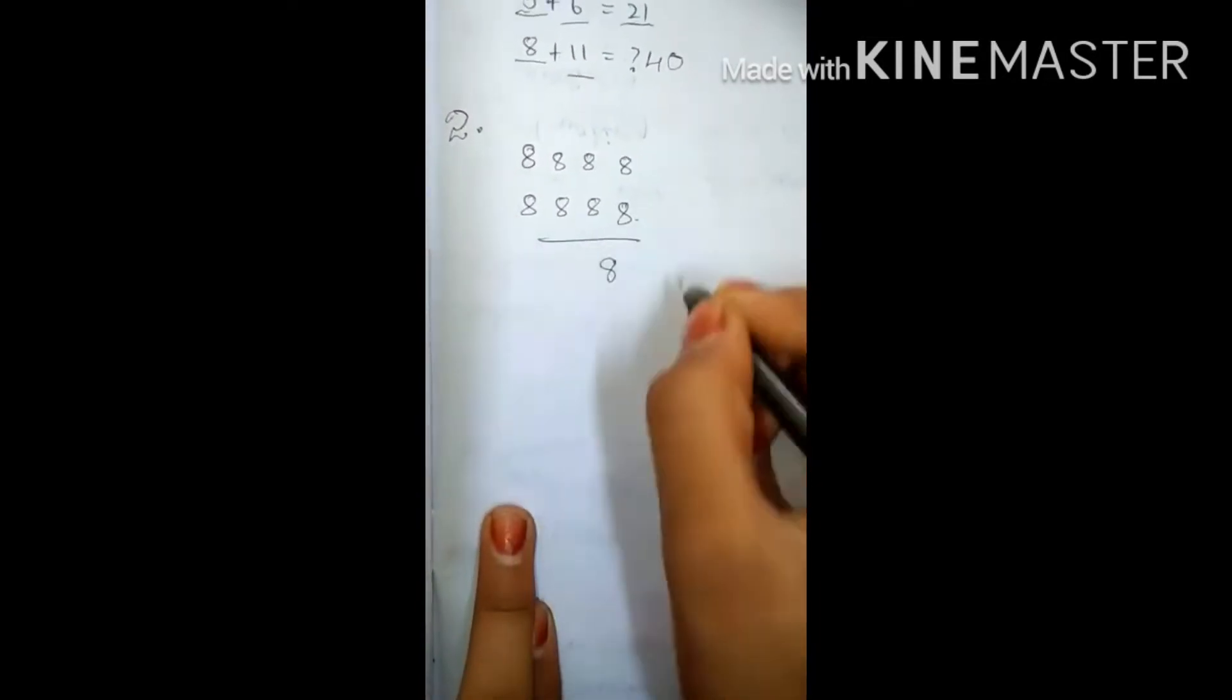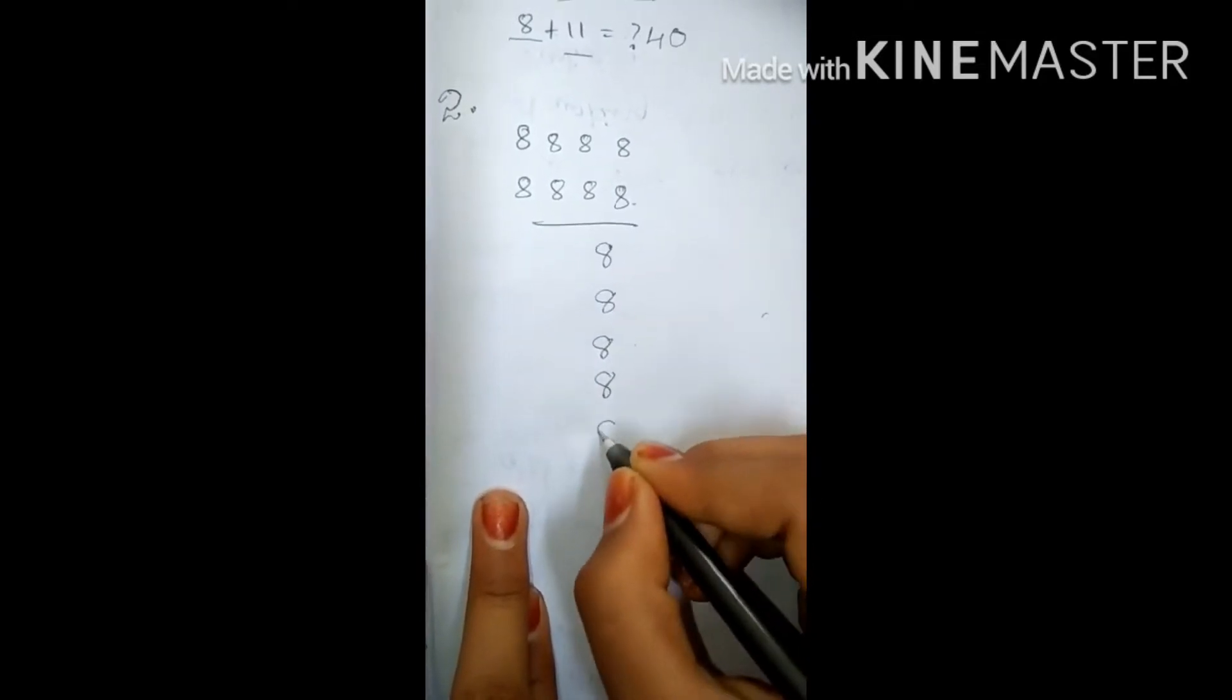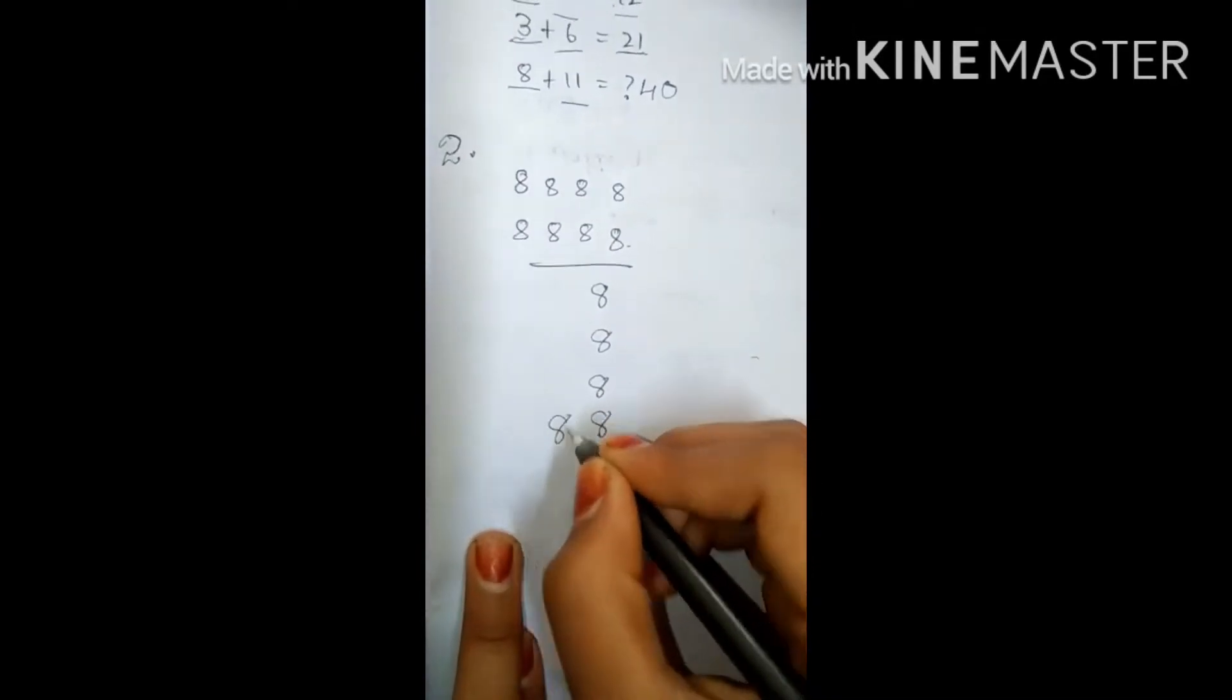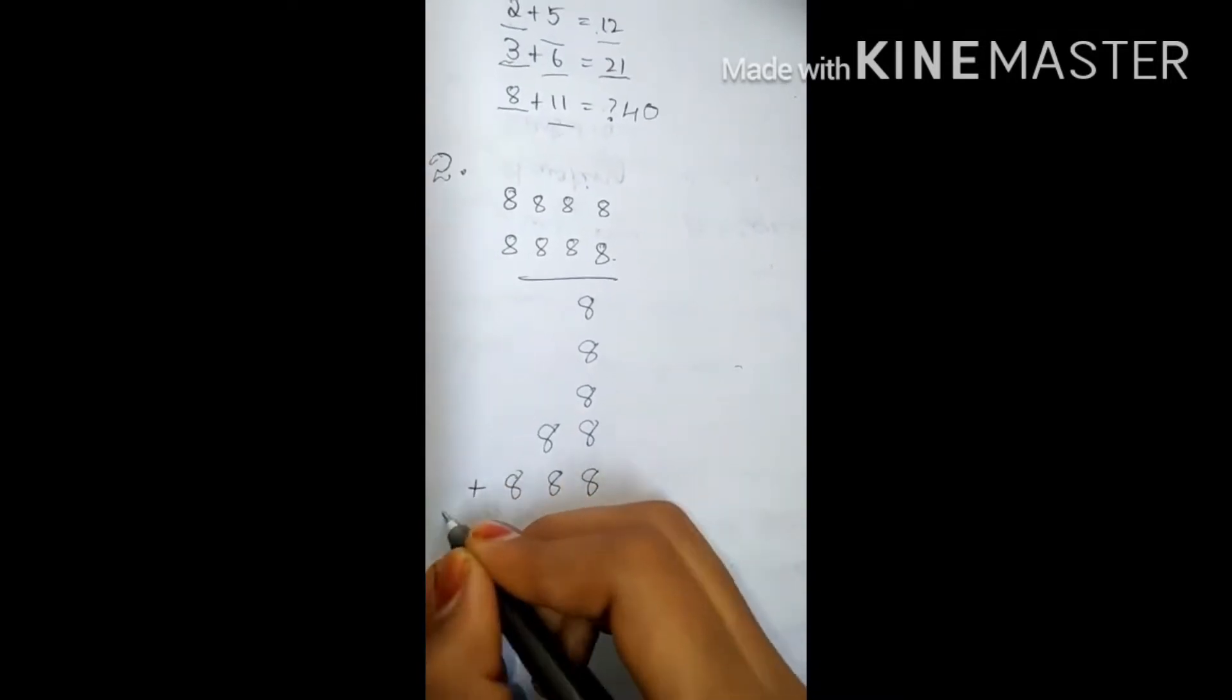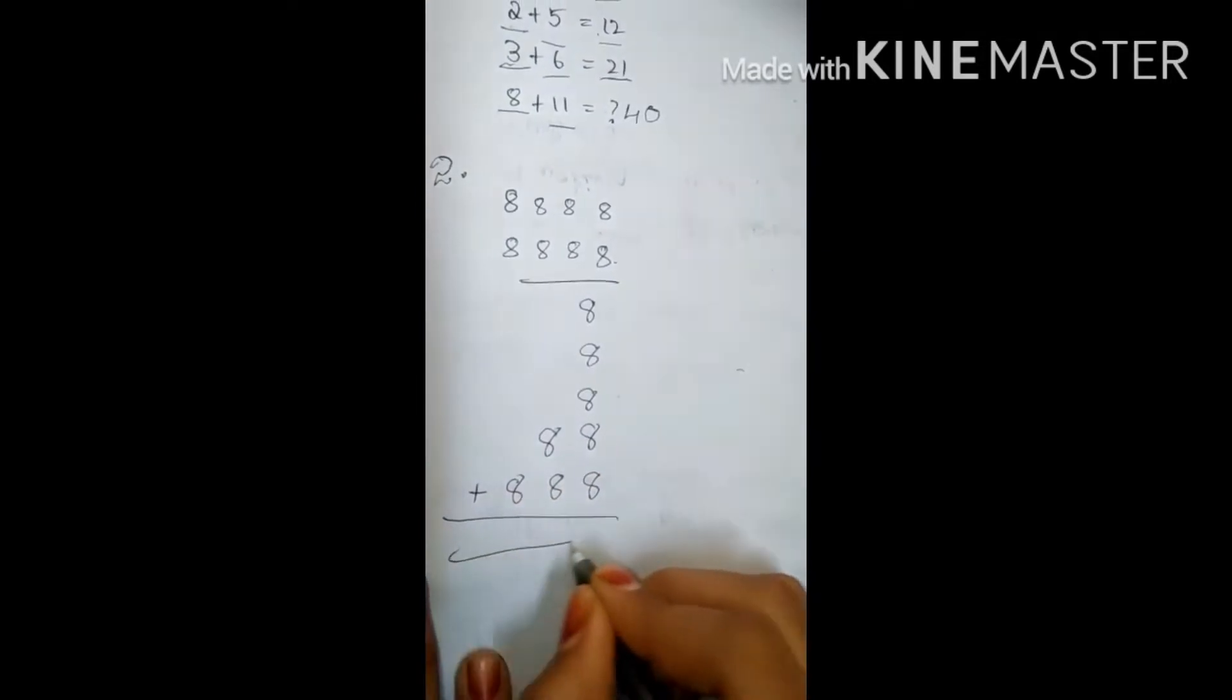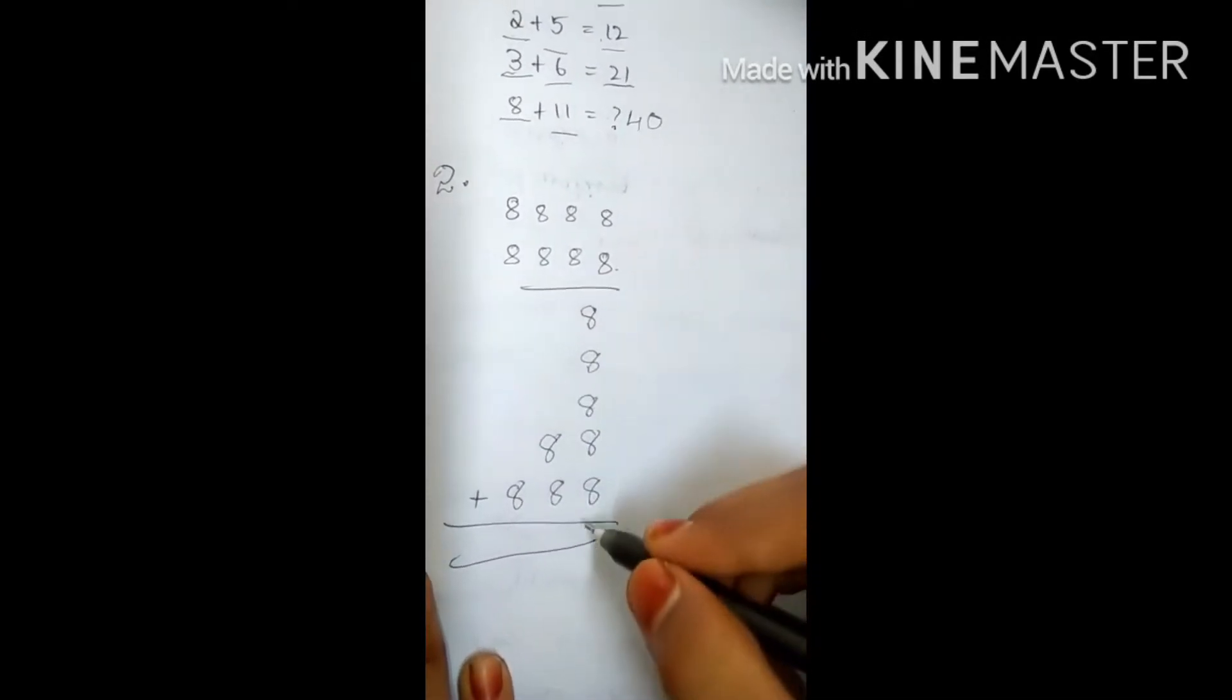Right here, 8 eights: 1, 2, 3, 4, 5. Here 2 eights. Here 1 eight. We should plus this, okay. Here 8 plus 8, means all these 5 eights equals 40, right?